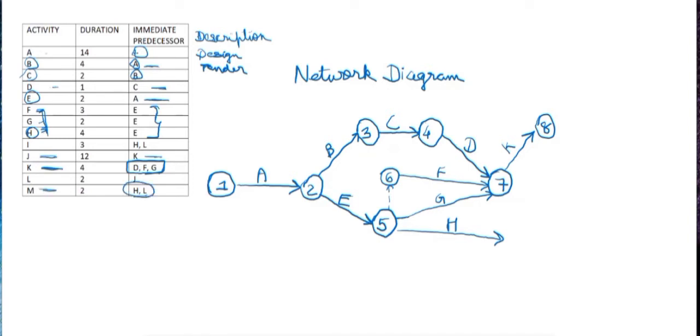Now from node 8 we'll draw the activity J, and then for I and M the immediate predecessor activities are H and L. So firstly let's just draw J.